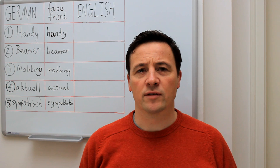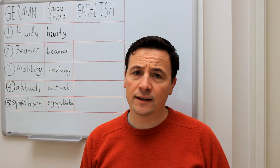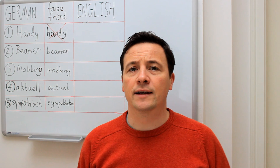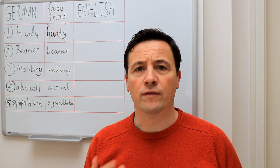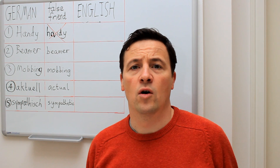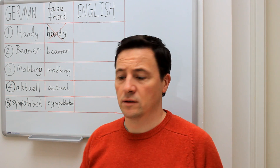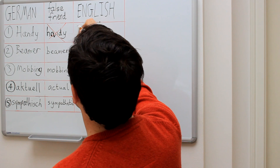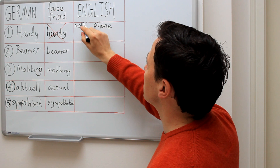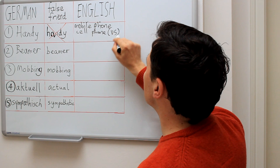The first false friend I want to talk about is the German word 'handy'. In English, 'handy' is not the same — it means useful or convenient. The English word for a handy is simply phone, mobile phone, cellphone, or maybe even smartphone.